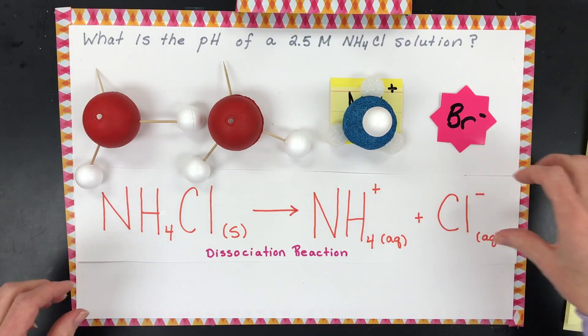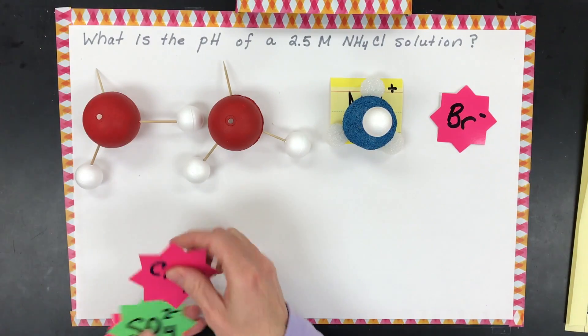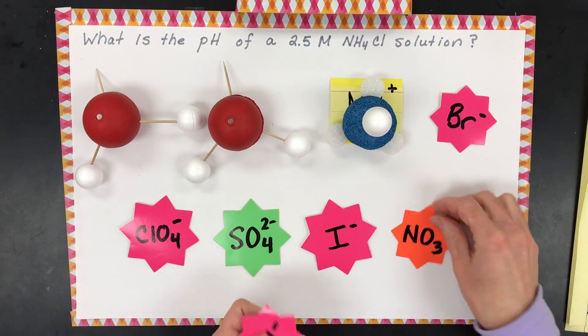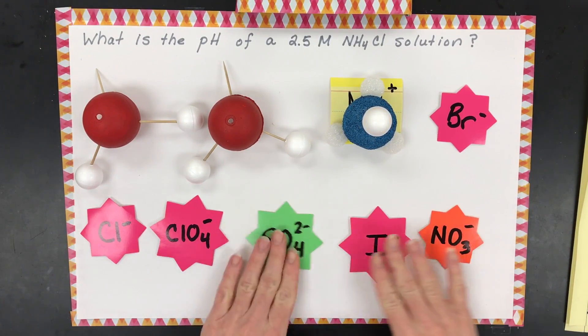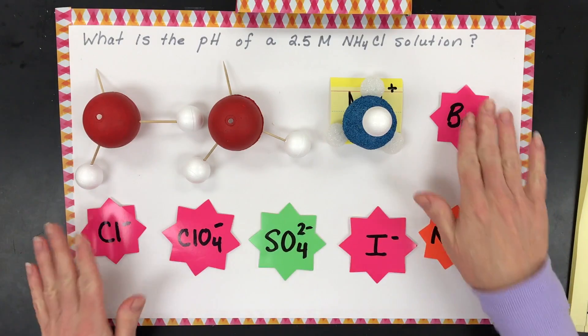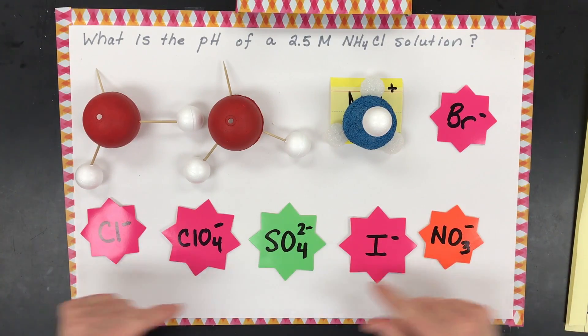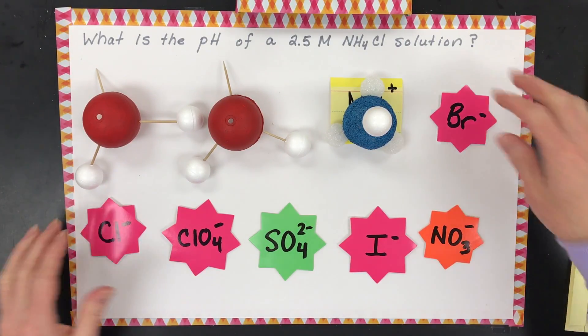If you look at that list, they are all from strong acids. So if you add a hydrogen ion back to these, they all make a strong acid. That's how you memorize which ones are which.